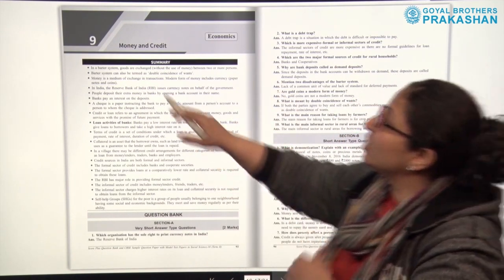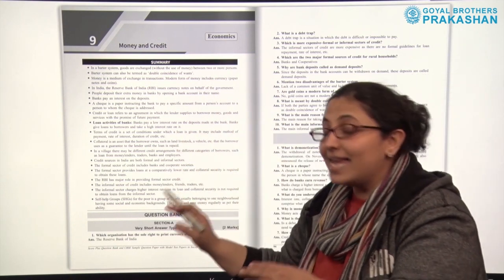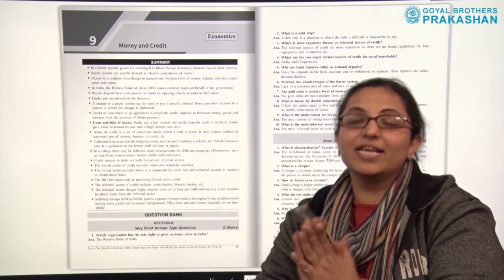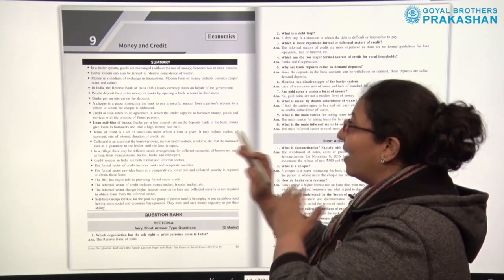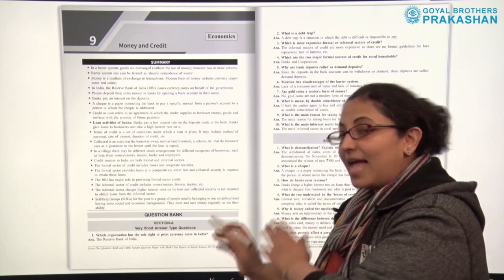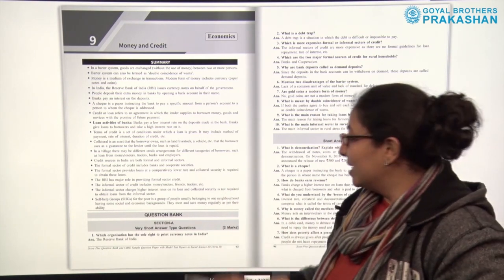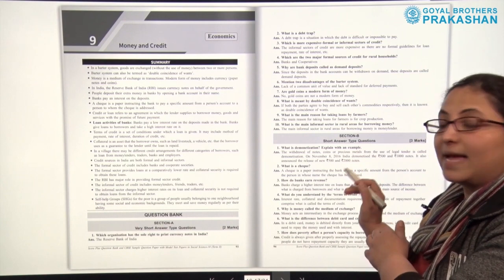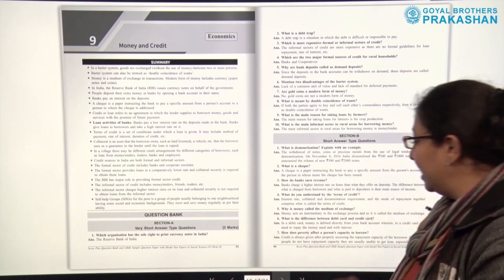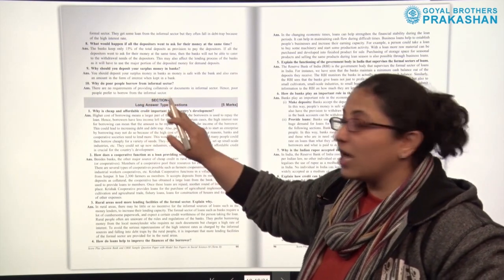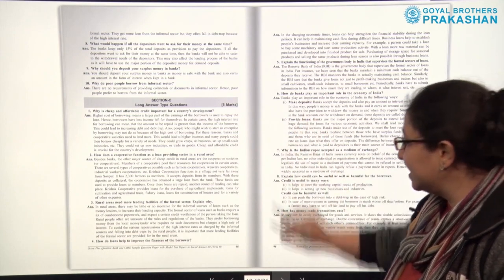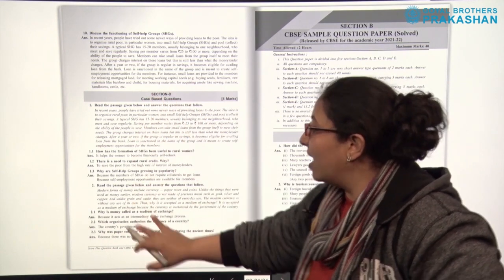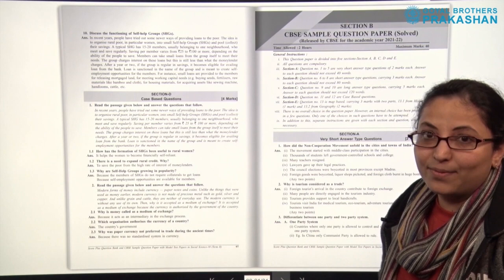After that, we come to another unit — chapter 9, Money and Credit, Economics. Again, the summary is given in the starting, with everything given point-wise for the child to revise in a very short while. After the complete summary, we have the question bank, designed in a similar manner to the sample question paper. We start with 2-mark very short answer type questions, then short answer type questions in section B for 3 marks each, then section C long answer type questions for 5 marks each. After that, we have section D case-based questions, with all answers provided.